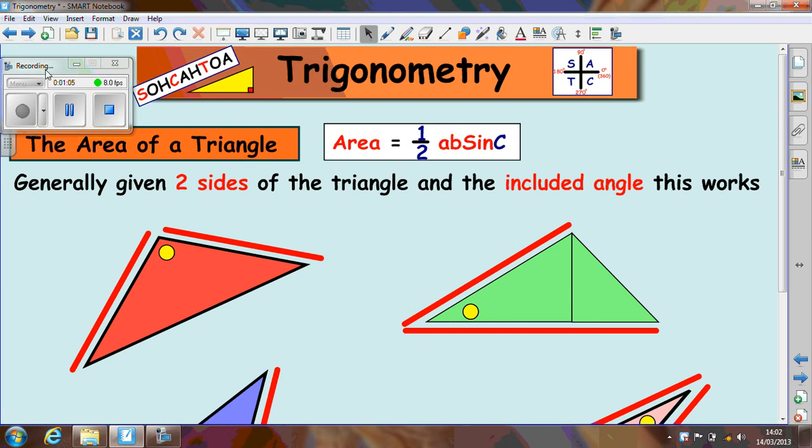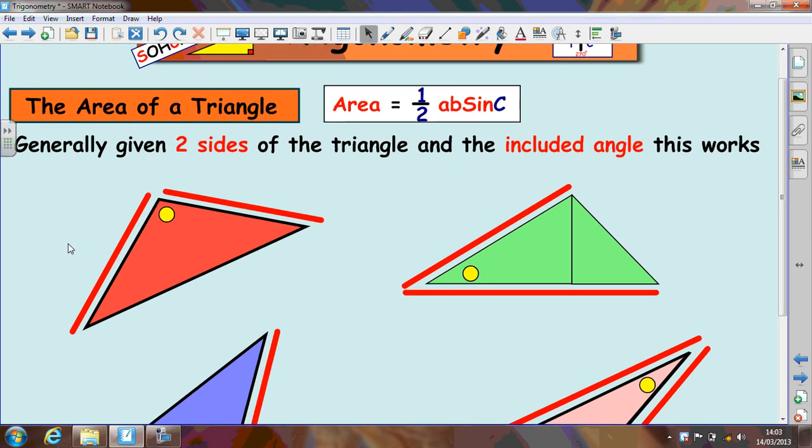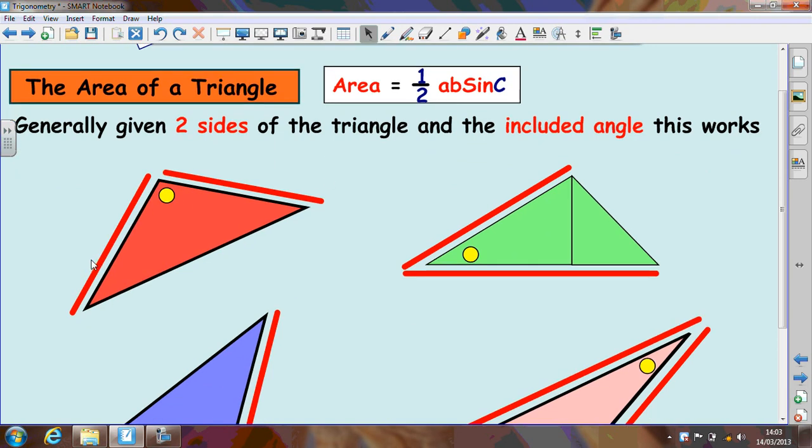The first thing we're going to look at is the area of a triangle. In order to use the area of a triangle formula you need to have the information in the correct place. The information that we need to work out the area of a triangle is two sides and the angle in between these two sides. When we have the information like that we can just substitute the values into the formula and use it.